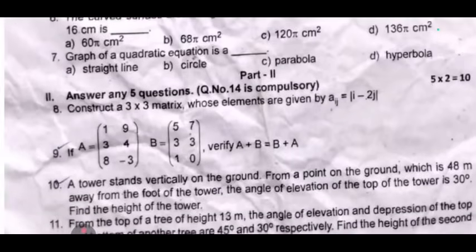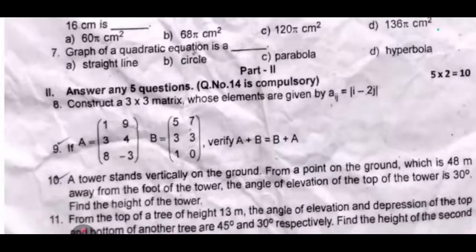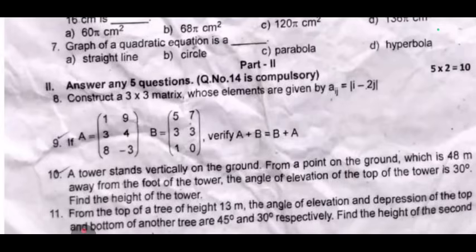Question 9: If A equals [1, 9, 3; 4, 8, -3; 2] and B equals [5, 7, 3; 3, 3, 1; 0], verify that A plus B equals B plus A.